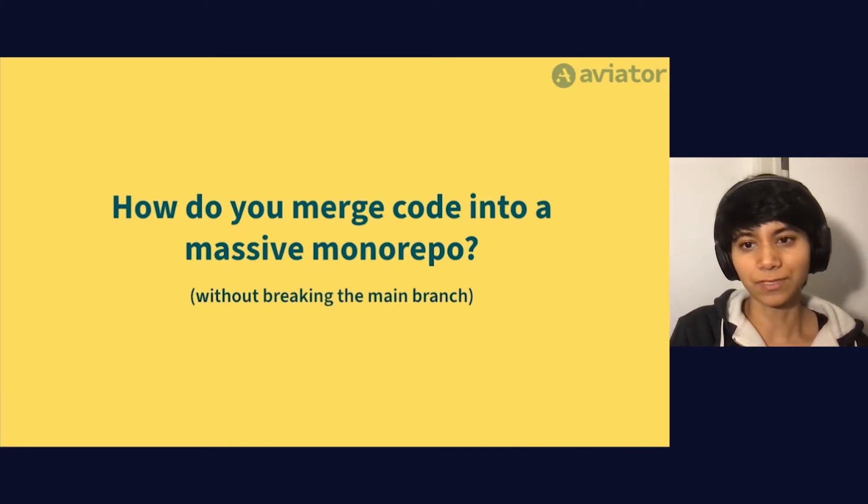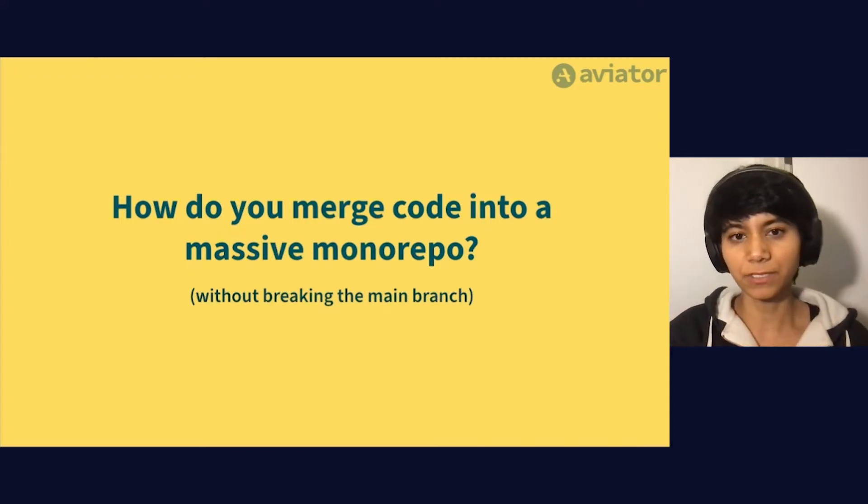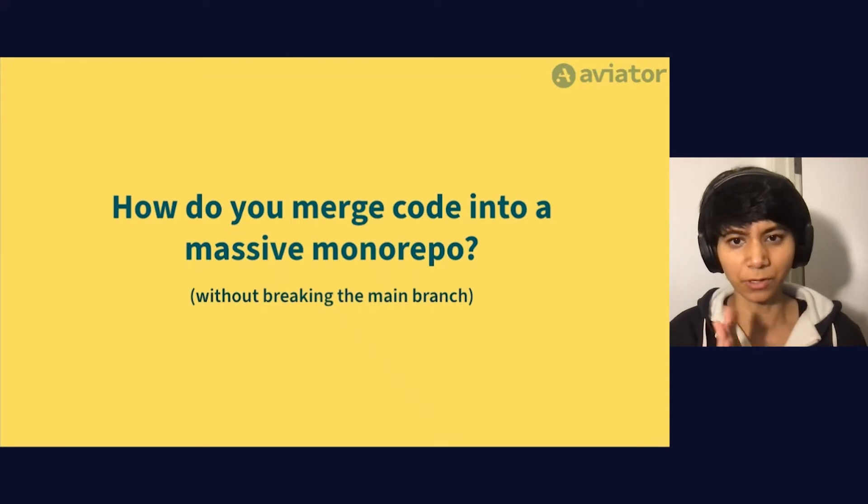This quick talk will focus on one specific problem, which is how do you maintain a working monorepo at scale so that your developers don't have to worry about babysitting their pull requests through all sorts of cumbersome code merge processes every time they want to merge code.